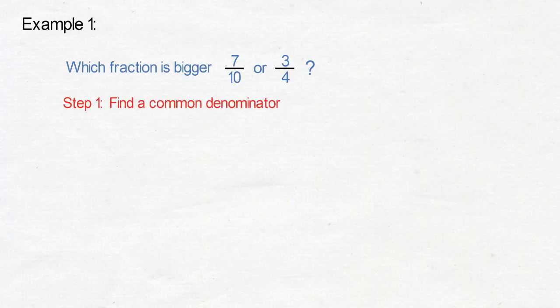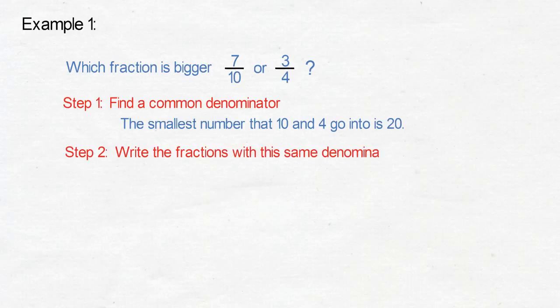Example 1: Which fraction is bigger, 7 tenths or 3 quarters? Step 1: Find a common denominator. The smallest number that 10 and 4 go into is 20. Step 2: Write the fractions with the same denominator.